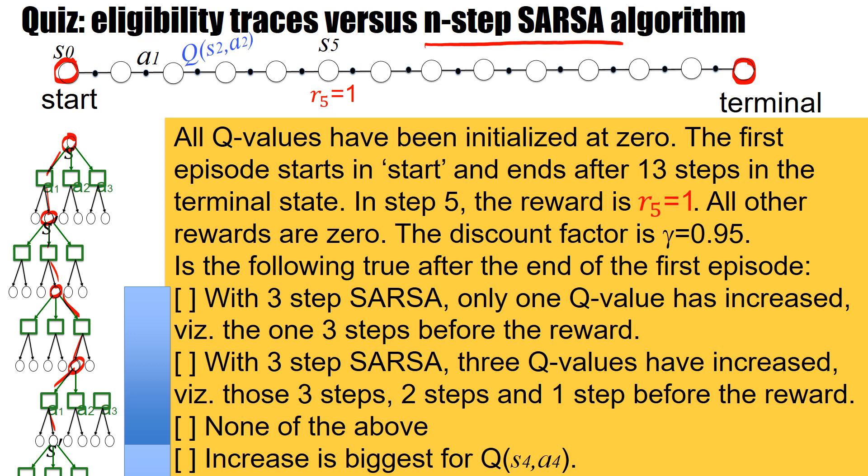Reading the problem text: all Q-values have been initialized at 0. The first episode starts in the start state and ends after 13 steps in the terminal state. In step 5 the reward is 1; all other rewards are 0. The discount factor gamma is 0.95.